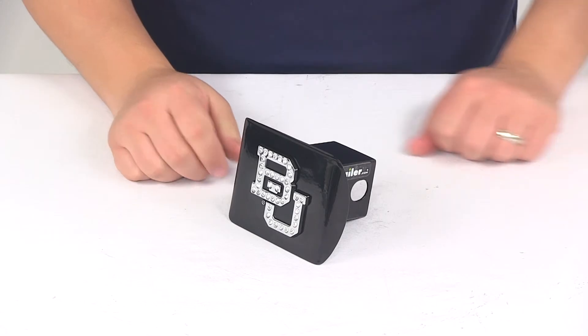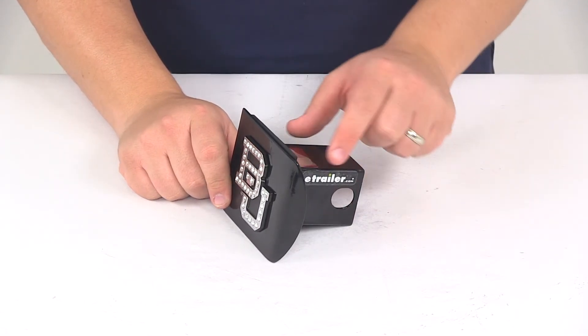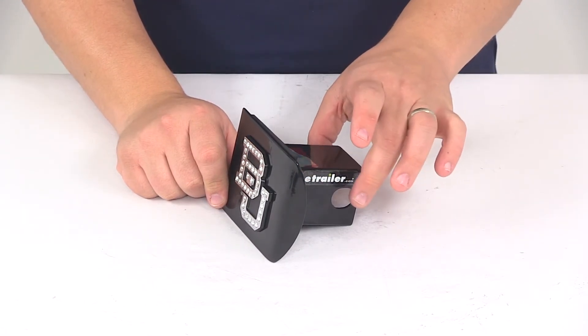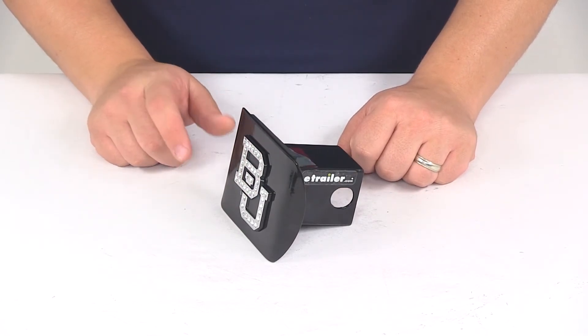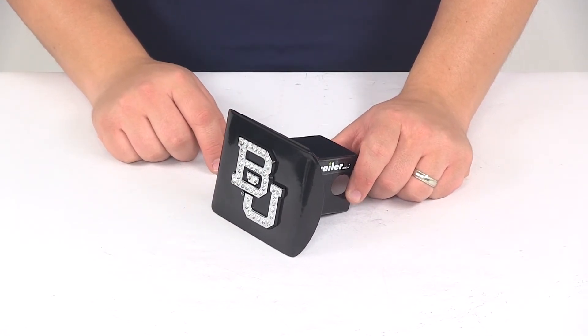And again, this is designed for a two inch by two inch hitch. Very simple installation - all you have to do is slide it into the receiver tube of your hitch. When your pinholes line up, just install your hitch pin and clip or your hitch lock to get it secured.